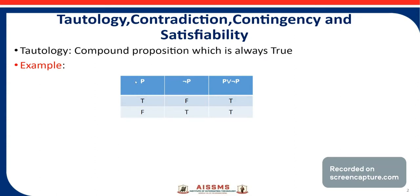Now consider one example here. The value of P is true, so the negation of P is false. The value of P is false, then the negation of P is true. Then we have to find out P or negation P. Now we know what disjunction is — disjunction means whenever one value is true, the result would be true.